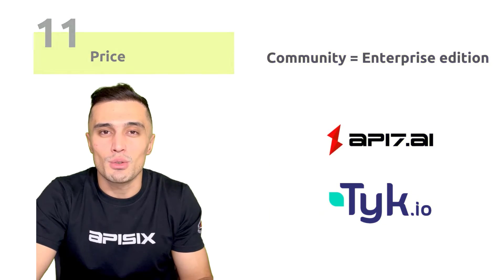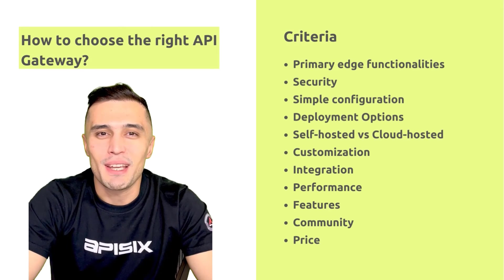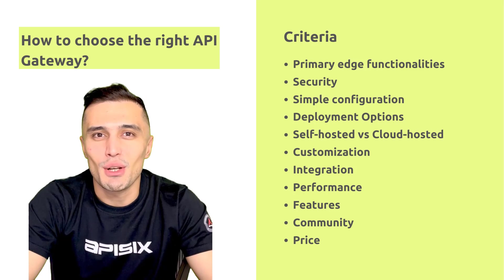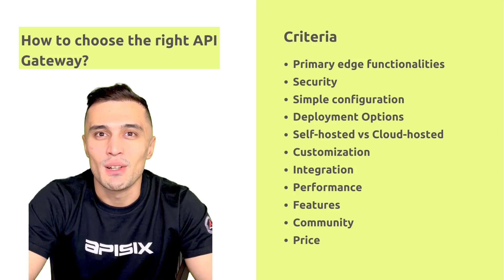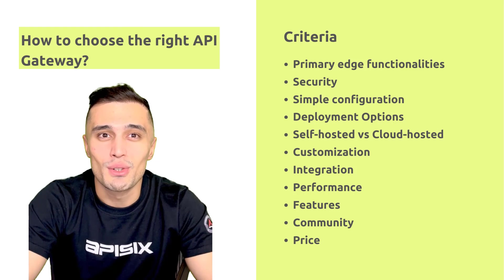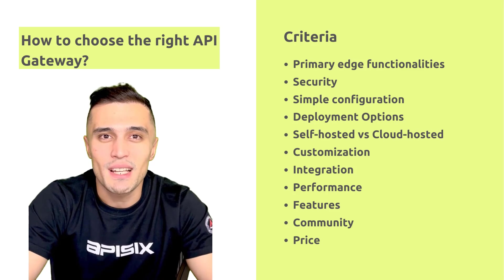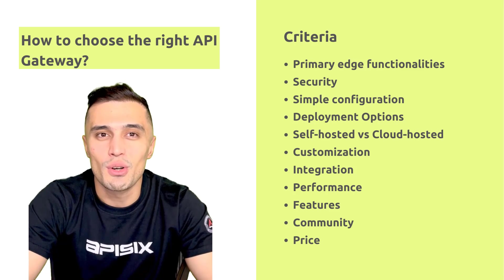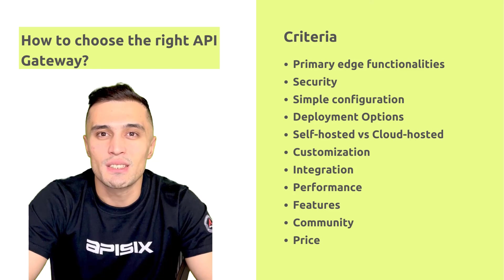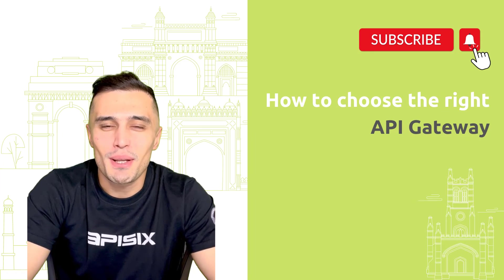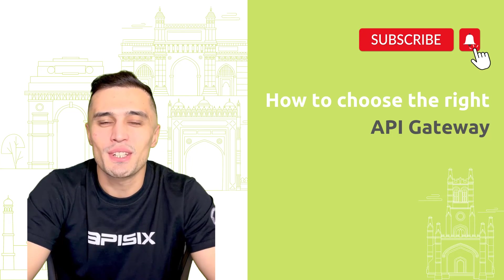To summarize, API Gateways are essential parts of modern cloud-native microservice API architectures. However, choosing the right API Gateway solution is not straightforward — you can find many open source and enterprise tools on the market, both on-premises and SaaS. There is no one-size-fits-all solution; the correct choice depends on many aspects as listed, and each organization's unique needs. Thank you for watching — if you want to learn more about Apache APISIX, please subscribe to our channel and click the bell to receive notifications about new videos.